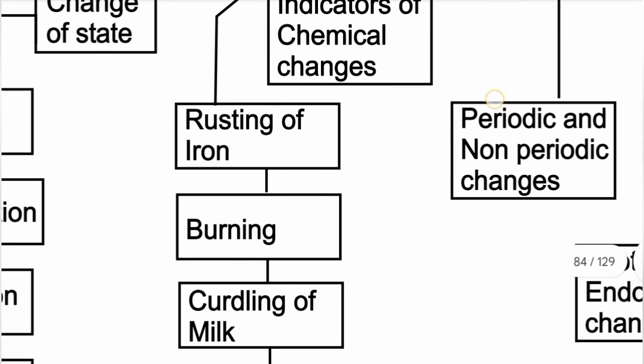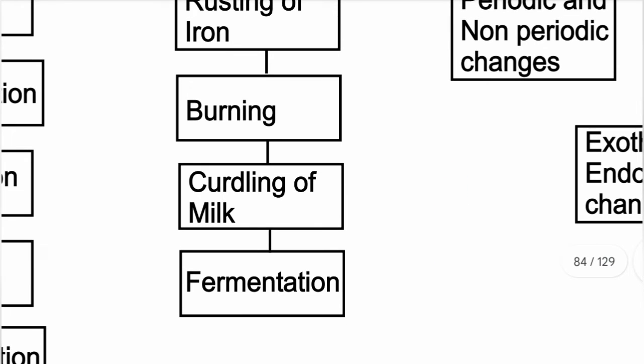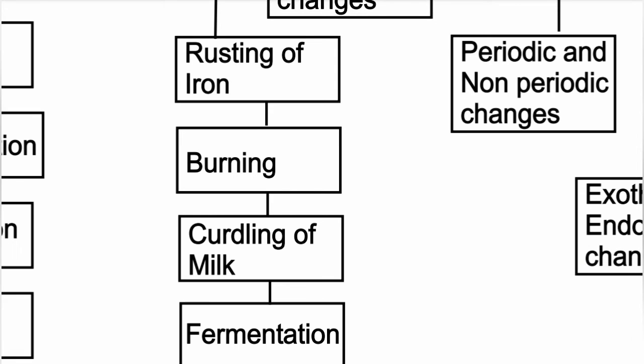Chemical changes may release light energy or involve absorption of heat. Indicators of chemical changes include: rusting of iron, burning, curdling of milk, and fermentation. Fermentation involves microorganisms — yeast or bacteria — that break down sugar to produce alcohol and carbon dioxide. This is an irreversible process; alcohol cannot be turned back into sugar.